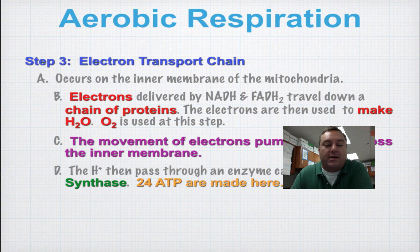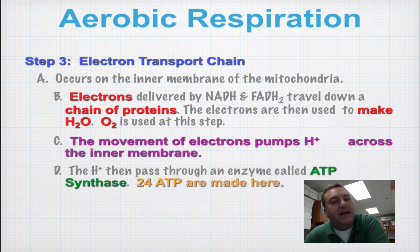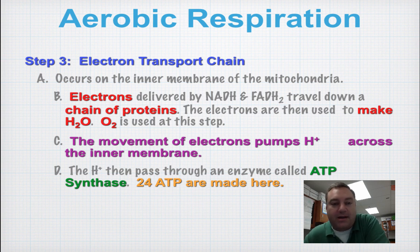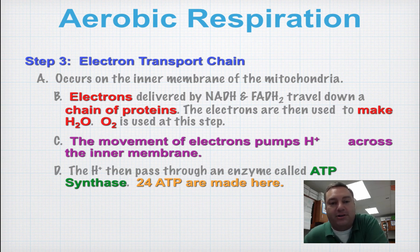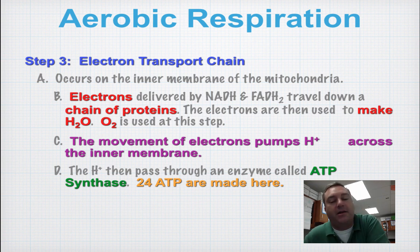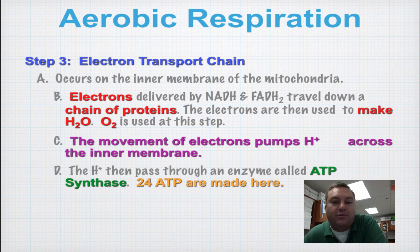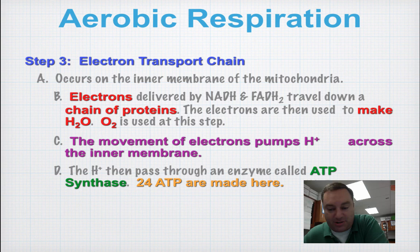The electron transport chain's purpose is to take all those electrons made in the previous two steps and use them to make ATP. The movement of those electrons down the chain pumps hydrogen ions across a membrane, creating what is called a proton gradient. These protons, or hydrogen ions, then pass through an enzyme called ATP synthase, and ATP synthase — just like the word itself is telling you — is going to make ATP.